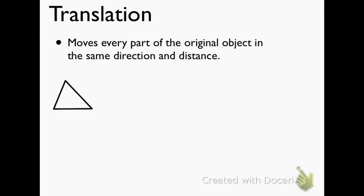When you're looking at transformations in geometry, specifically congruence transformations, a very popular one is a translation. This is when we move every part of an original object in the same direction and distance to create a new image.